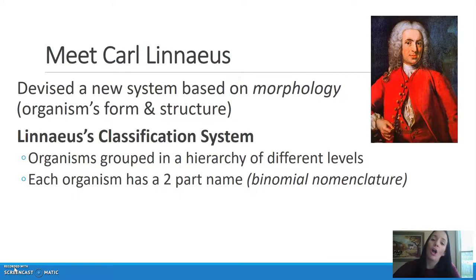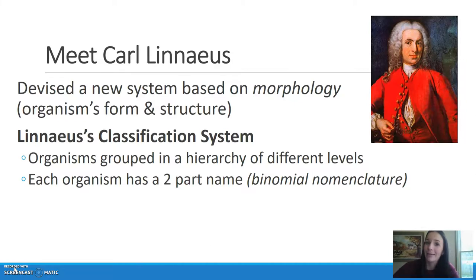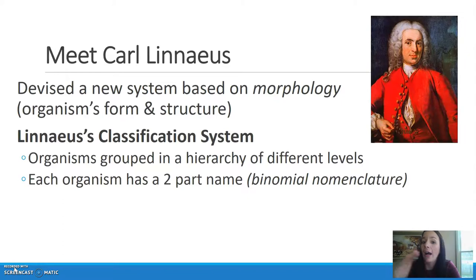Someone by the name of Carl Linnaeus — he actually changed his name to Carolus Linnaeus to sound more Latin — devised a new system based on morphology, which is an organism's form and structure. His classification had a hierarchy of different levels ending with a two-part name, referred to as binomial nomenclature.